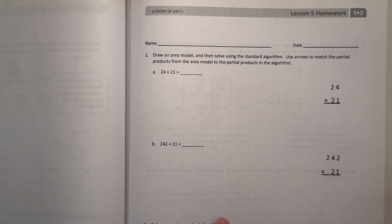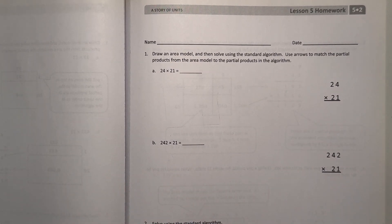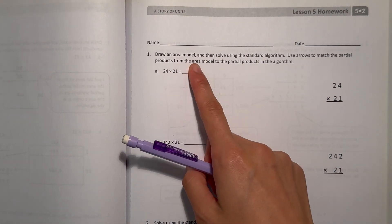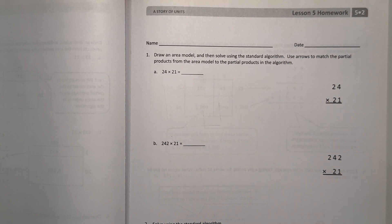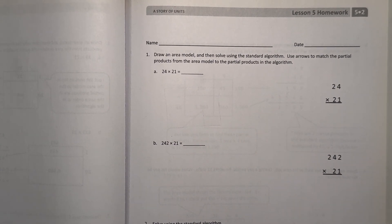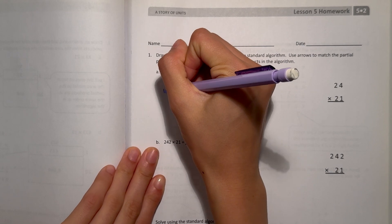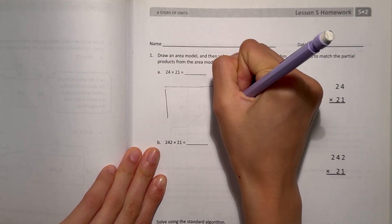Hey guys, Aubrey here! Today I'm doing the Eureka Math Grade 5 Module 2 Lesson 5 homework. So let's get started. Draw an area model and then solve using the standard algorithm. 24 times 21.